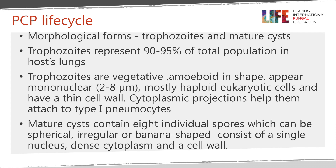Cysts are a smaller, more resistant form. Mature cysts contain eight individual spores within them. They are spherical, irregular, or banana-shaped and consist of a single nucleus, dense cytoplasm, and a cell wall. These two forms are quite distinct from one another.